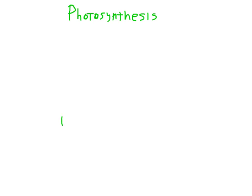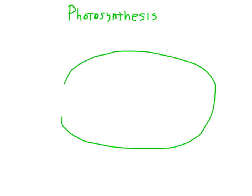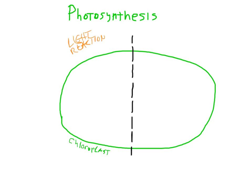This little video is about photosynthesis. This large oval represents the cellular organelle called the chloroplast. We are going to divide this model into two parts separated by this black line. On this side we will have the light reactions, while on this side we will have the Calvin cycle.